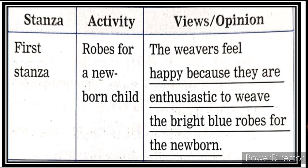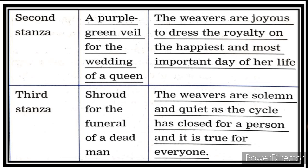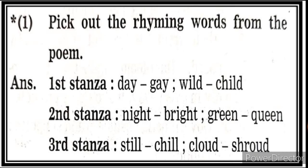First stanza: robes for a newborn child — the weavers feel happy and enthusiastic to weave the bright blue robes for the newborn. Second stanza: purple and green wheel for the wedding of a queen — the weavers are joyous to dress the royalty on the happiest day of her life. Third stanza: shroud for the funeral of a dead man — the weavers are solemn and quiet as the cycle has closed for a person, and it is true for everyone. Rhyming words — first stanza: day/gay, wild/child; second stanza: night/bright, green/queen; third stanza: still/chill, cloud/shroud.